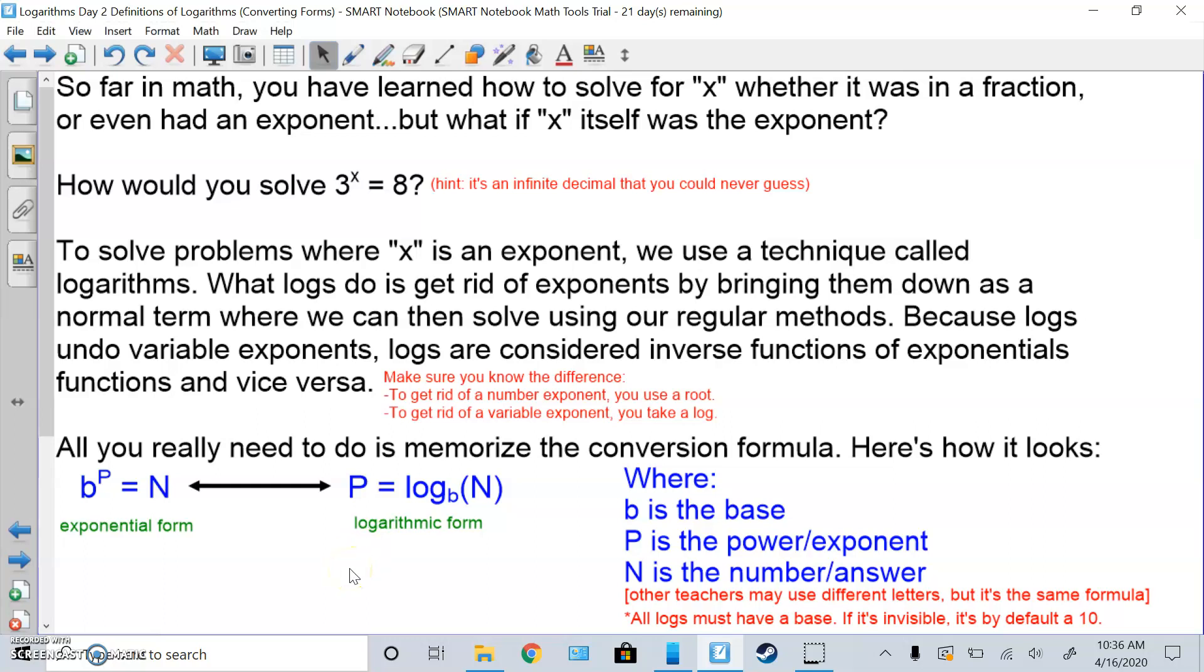So far in math, you've learned how to solve for x, whether it was in a fraction or it had an exponent. But what if x itself was the exponent? So how would you solve 3 to the x power equals 8? Well, 3 to the first power is 3, 3 squared is 9, but 8 is between 3 and 9, so we know it's a decimal one point something. Now here's a hint, it is an infinite decimal that you could never ever guess.